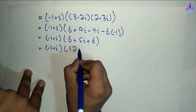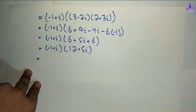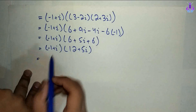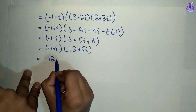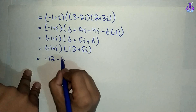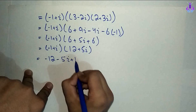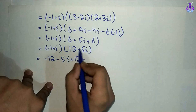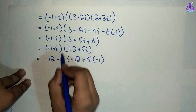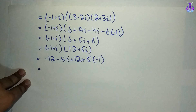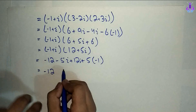Ab in dono ko aapas mein multiply karenge: (minus 1 plus iota)(12 plus 5 iota). Minus 1 multiply 12 equals minus 12. Minus 1 multiply 5 iota equals minus 5 iota. Iota multiply 12 equals 12 iota. Iota multiply 5 iota equals 5 iota squared equals 5 times minus 1 equals minus 5. Combining real parts: minus 12 minus 5 equals minus 17. Combining imaginary: minus 5 iota plus 12 iota equals 7 iota.